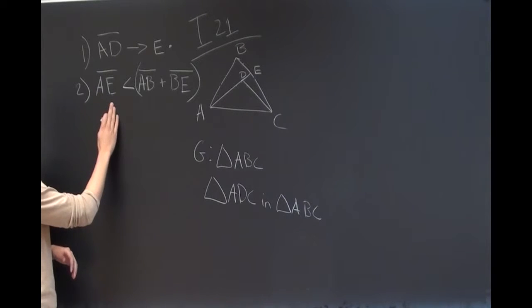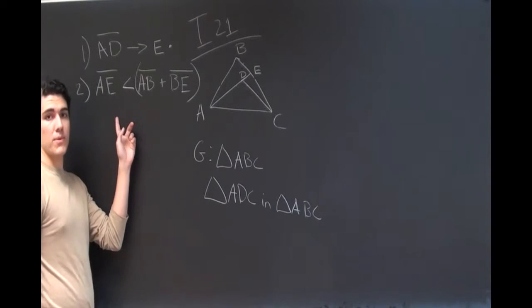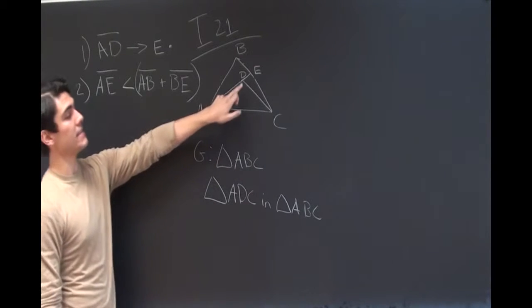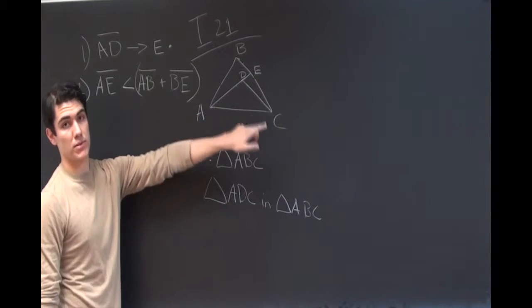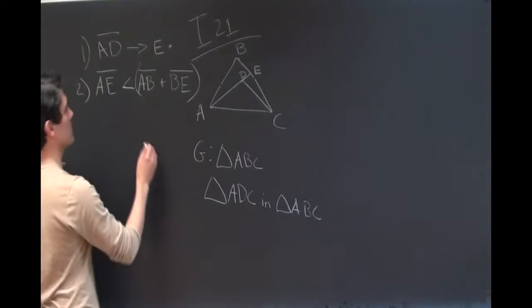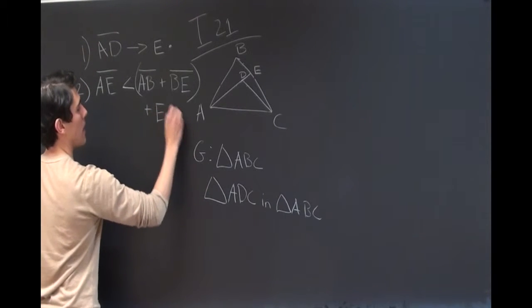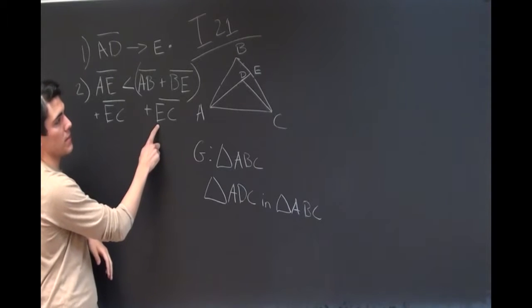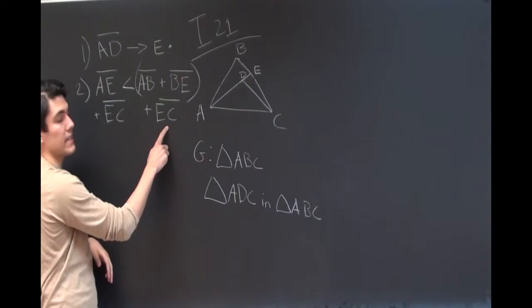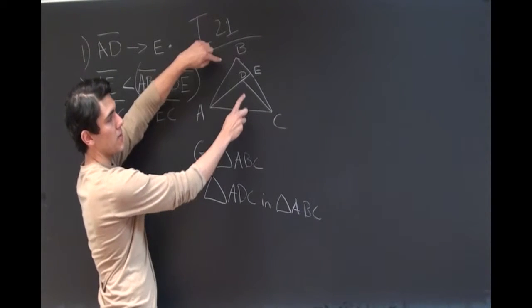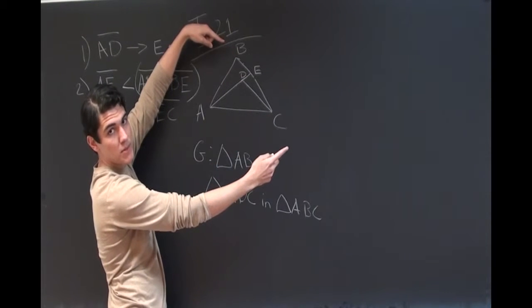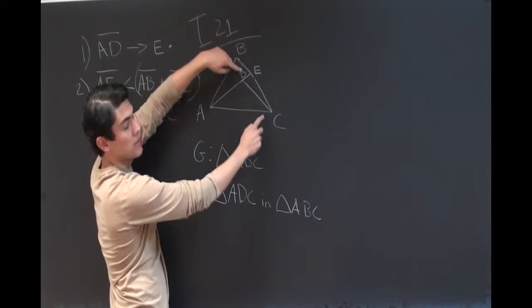So now that we have this inequality, what we're going to do to this inequality is add EC to both sides of the inequality. And we see on this side of the inequality that we have BE and EC added together, and if we look here on the diagram, BE and EC make up the line BC. So we're just going to substitute the line BC in for those two terms right there.